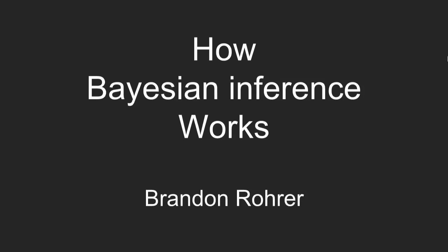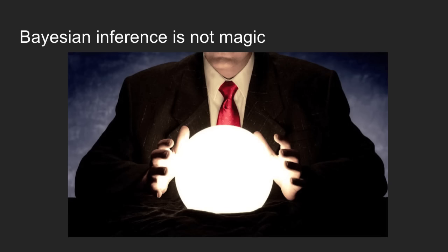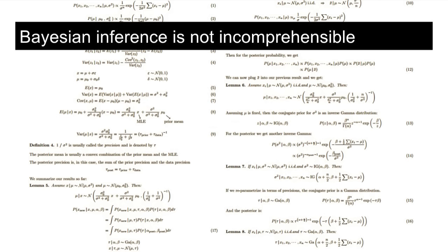Bayesian inference is a way to make guesses about what your data mean based on sometimes very little data. The way it works is tricky, but it's not magic — it's definitely something you can wrap your head around. My goal is that by the time we're done, you'll have a pretty crisp picture of how it works.